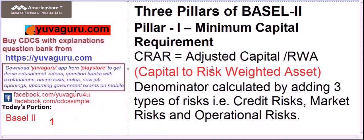This full CRAR concept is covered separately in another video while solving problems. Now, why is the word 'adjusted' used for capital? Because capital is of two types: Tier 1 and Tier 2. As per Basel 2, Tier 2 capital cannot be greater than Tier 1 capital, so we need to make adjustments.